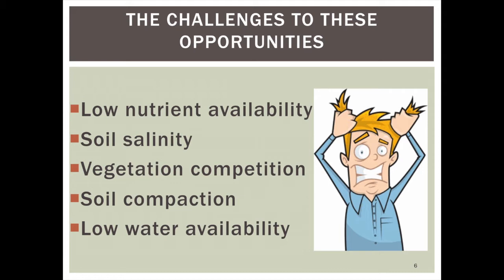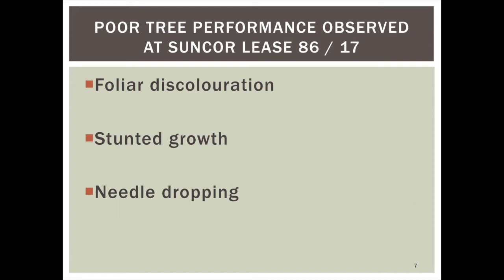Some challenges on reclaimed sites include low nutrient availability, soil salinity issues, soil compaction, low water availability, and vegetative competition. More specifically, at Suncor's Lease 86/17 — their main site north of Fort McMurray — trees have been planted on reclaimed sites over the last 20 to 25 years. Driving around that site, you can see poor tree performance: foliar discoloration or yellowing of leaves, stunted growth with very little leader growth each year, and trees dropping needles, retaining only the last couple years of growth.